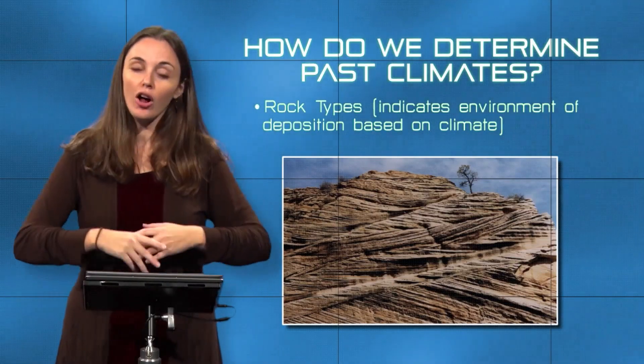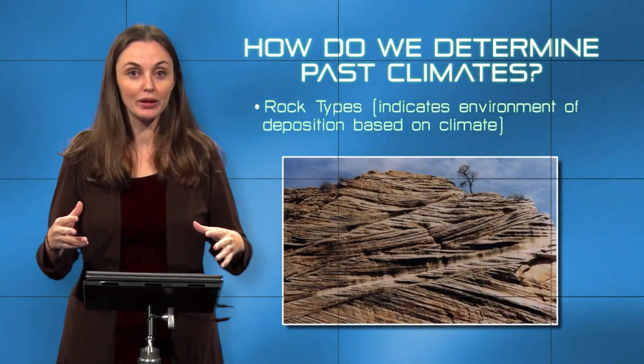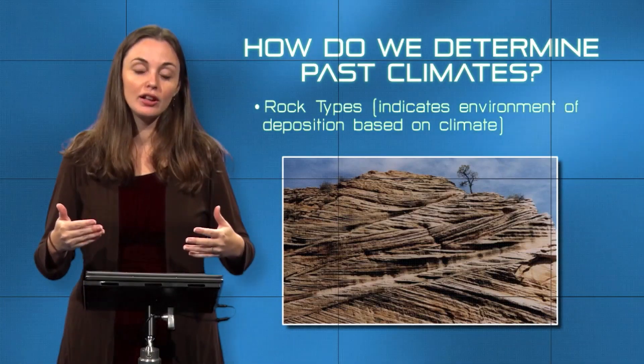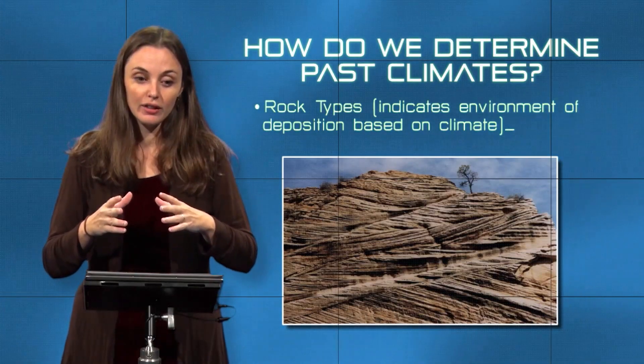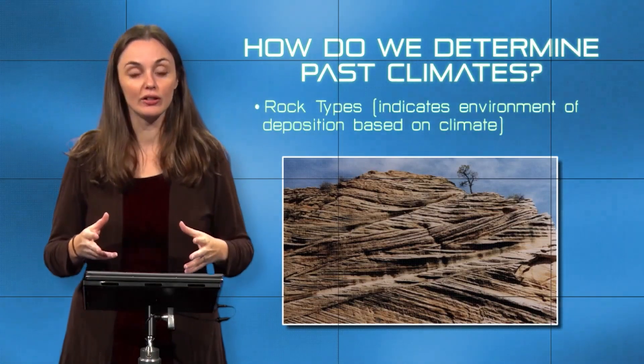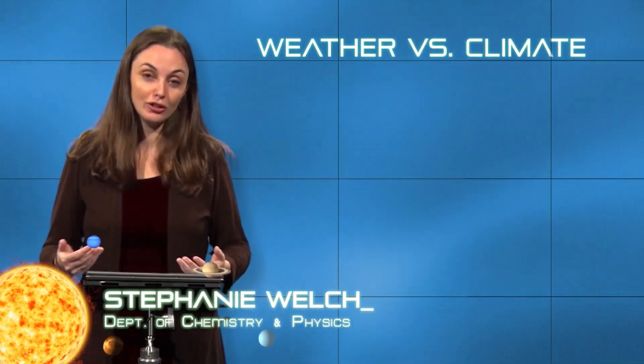You have to take all of these pieces of the puzzle — all the proxies for temperature and other aspects of climate like precipitation — and put them together to get a complete record of climate in a particular area. Using all of this, we can determine that there has been a huge range of variability in climate throughout Earth's past. Sometimes that variability drives big events like mass extinctions, because climate changes fast enough that life can't keep up.